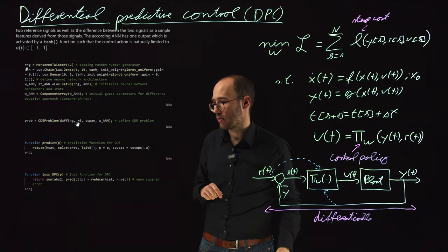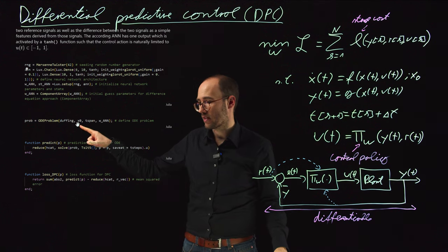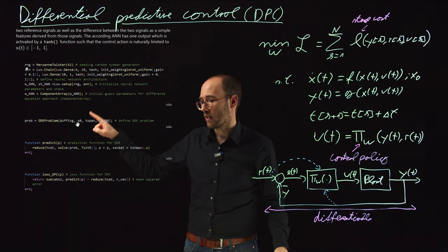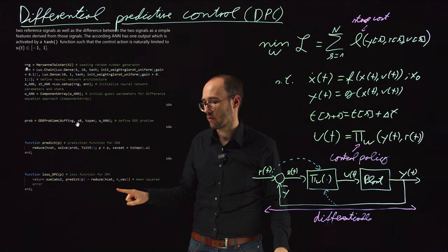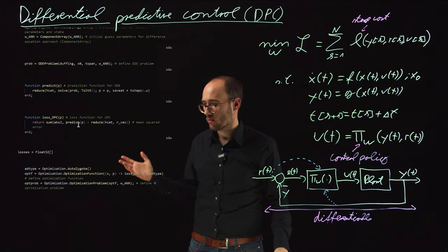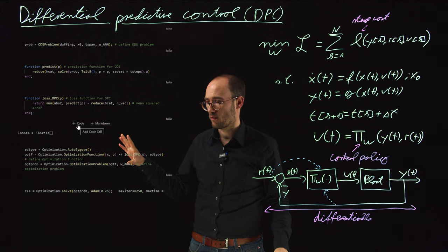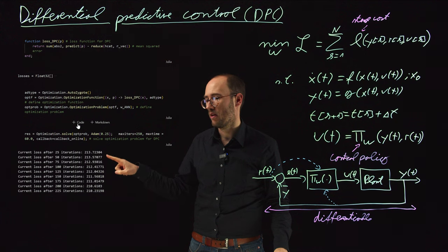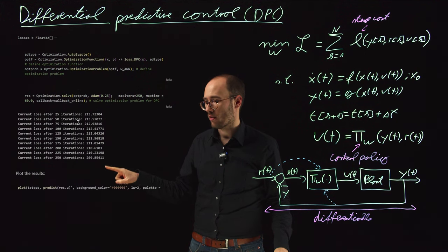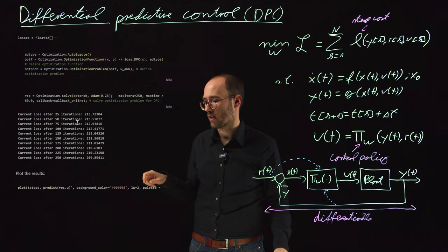We then put everything together: the Duffing oscillator simulation with the neural network as the control action, a prediction loop, a mean squared error loss function, and a standard optimization problem using Optimization.jl with a gradient descent solver — in this case, Adam with a decent step size. Most of the gradient descent progress is made within the first 25 iterations seen from the callback.